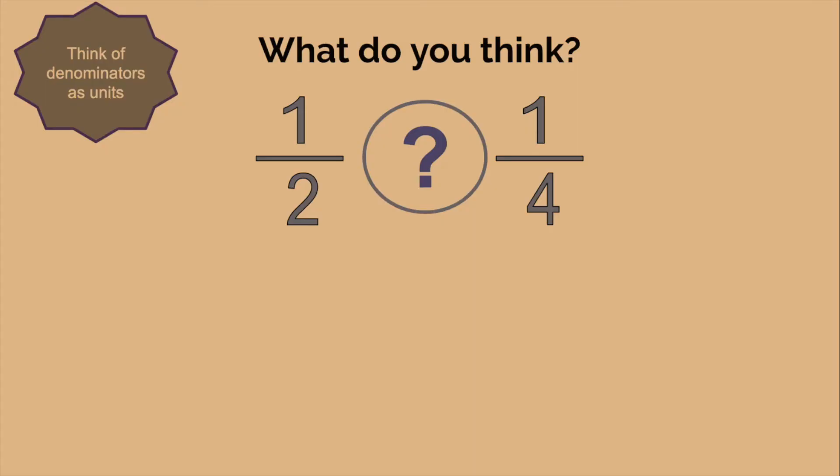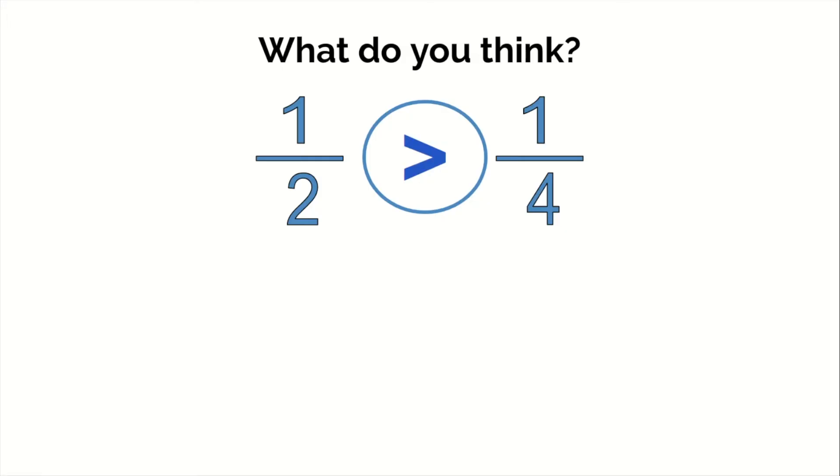Here we have common numerators. We have one of each, so it really just comes down to which one's bigger, a half or a fourth. I have one of both of them, so which one's larger? One half is in fact greater than one fourth because each of those halves is bigger than each of those fourths.